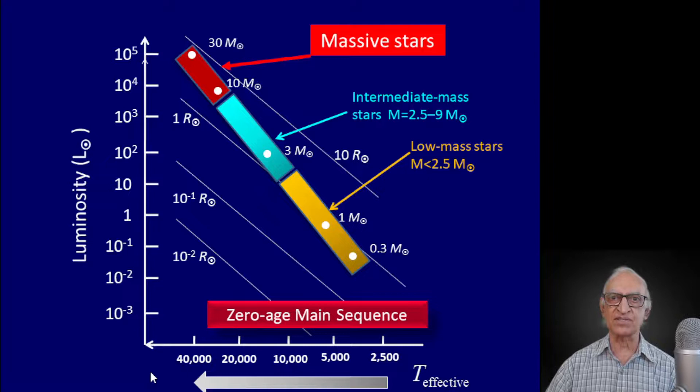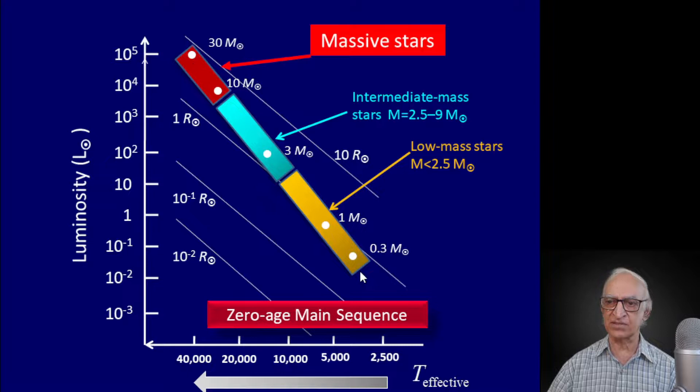Let's go back to the Hertzsprung-Russell diagram, a plot of luminosity versus temperature — luminosity increasing vertically and temperature increasing as we go from right to left horizontally. This diagonal band is the zero-age main sequence of stars. In the previous lecture, we discussed the low mass stars; today we shall be discussing these intermediate mass stars.